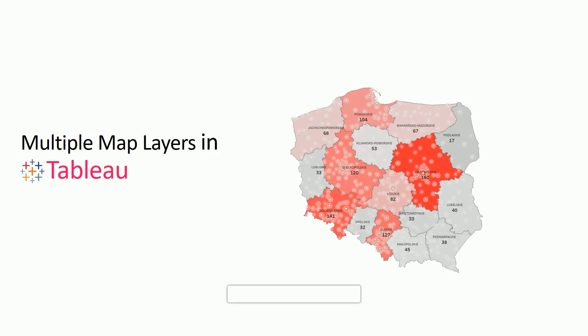Today we will explore Tableau's new feature, multi-layers in maps, which was released in Tableau 2020.4. Before this version, we were only able to have two layers with maps using the dual axis technique, but now with this release we can add as many layers as we want to enhance the visual effect.